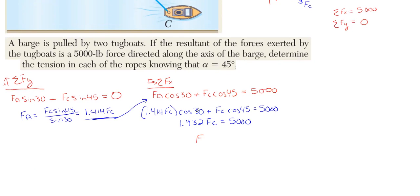We can easily get F_C here by taking the 5,000 and dividing it by 1.932. This gives us 2,588 pounds in that general down-right direction. So there's one of our answers.